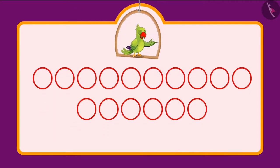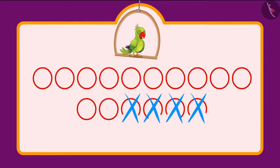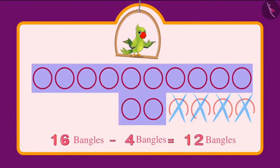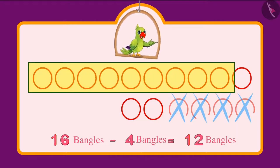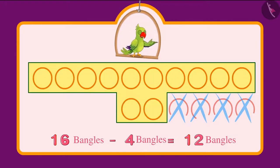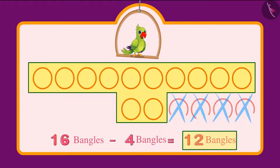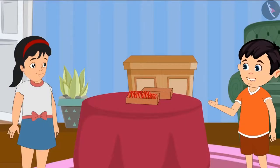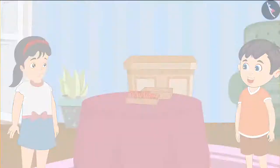This means that if you subtract 4 bangles from 16 bangles, then we will get 12 bangles. So Chotu has a group of 10 and 2 more bangles — that is 12 bangles in total. Okay, now I understood. Thank you Aarti.